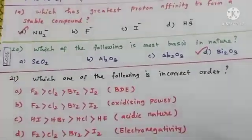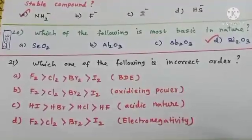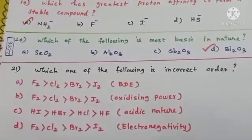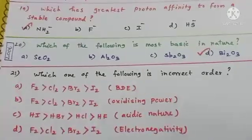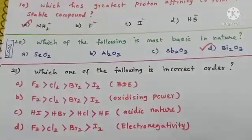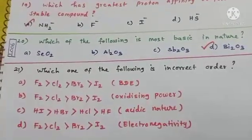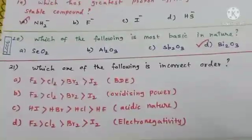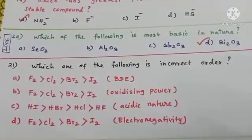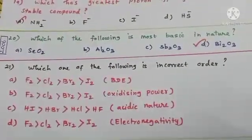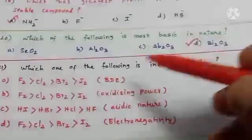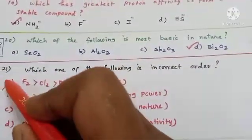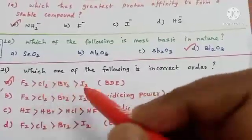Option D is the correct answer for Q20. Question 21: which one of the following is an incorrect order? Option A gives bond dissociation energy of halogens as F₂ > Cl₂ > Br₂ > I₂. This is incorrect — fluorine has less bond dissociation energy than chlorine and bromine, which is why fluorine is the most reactive halogen. So option A is an incorrect order.